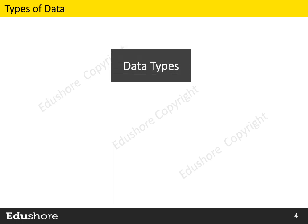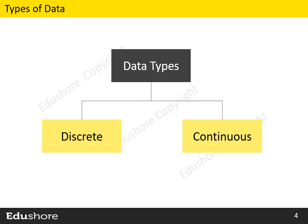Before we proceed, we need to look at some fundamentals about data. Let's understand the types of data. There are two types of data: discrete data and continuous data.